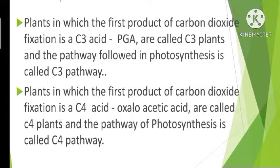Scientists tried to determine whether all plants produce 3-phosphoglyceric acid as the first product of carbon dioxide fixation, or whether any other product is formed in other plants. They conducted various experiments over a wide range of plants and found that in some plants, the first stable product of carbon dioxide fixation was a 4-carbon organic acid, identified as oxaloacetic acid. Plants where the first product of CO2 fixation is a C4 acid are called C4 plants, and the pathway followed is called the C4 pathway.